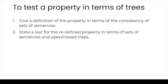In general, to test a property in terms of trees, we have to give a definition of the property in question in terms of the consistency of sets of sentences. Then we state a test for the redefined property in terms of sets of sentences and open or closed trees. Let's start with thinking about validity in terms of consistency and inconsistency.